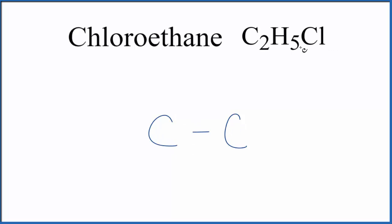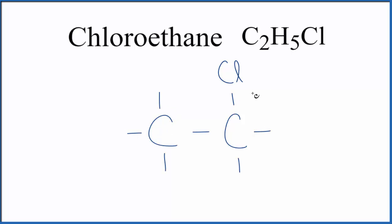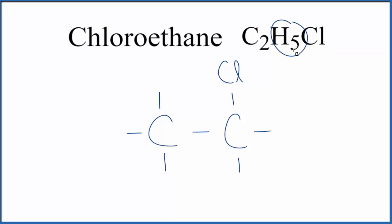We know we have one chlorine, and it really doesn't matter where we put it — let's just put it right here. And then for the rest of the molecule, we have the hydrogens, so let's put those around. We've used five hydrogens, one chlorine, and two carbons — so that's our chloroethane. This is the structure for chloroethane.